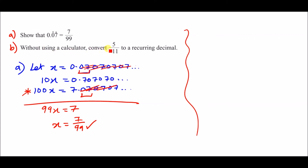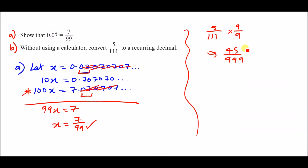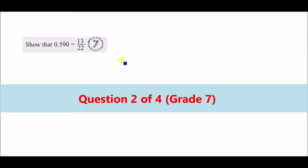Part B: convert 5 over 111 to a recurring decimal without a calculator. The trick is to get nines on the denominator. Multiply top and bottom by 9: that gives 45 over 999. With three nines, we have three recurring digits, and the numerator is 45 — so we write 0.045 recurring. That's how you convert a fraction to a recurring decimal.